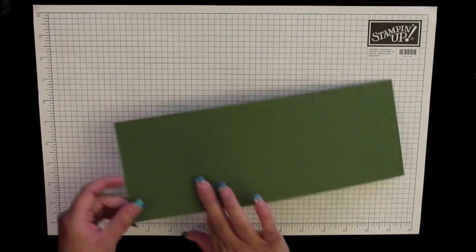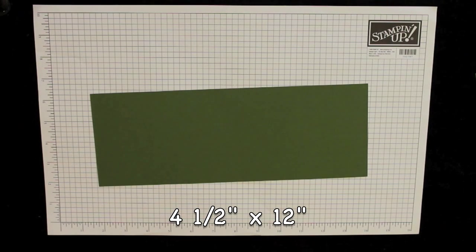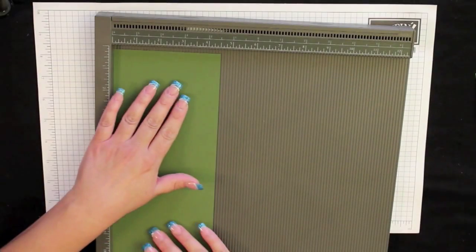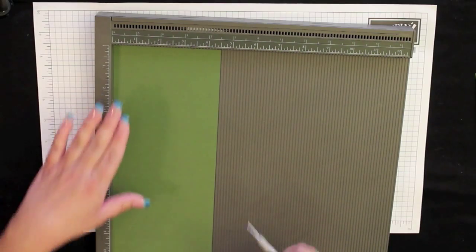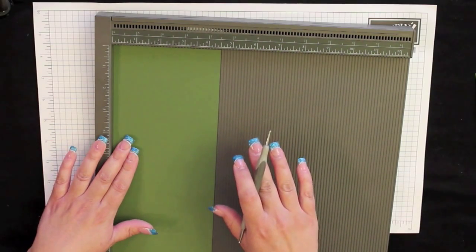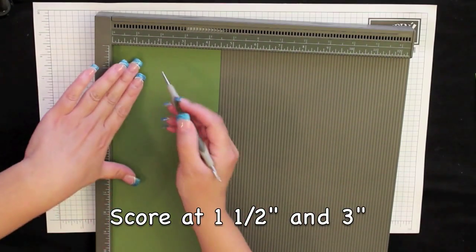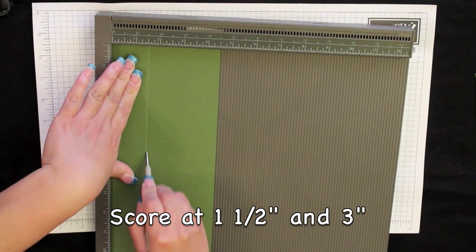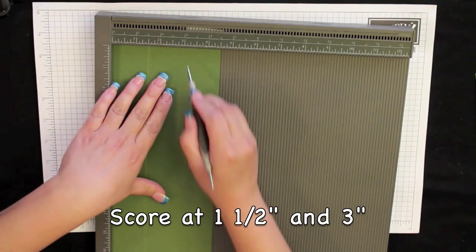To start with, you need a 4 1/2 inch by 12 inch piece of cardstock. I'm using mossy meadow for this box. So to start with, you're going to have the 4 1/2 inch going across the top. You're going to score it at 1 1/2 inches and 3 inches.